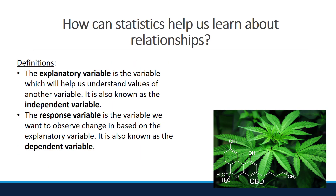The explanatory variable is the variable which helps us understand the value of another variable. It is also known as the independent variable. In the news article, whether a state has marijuana laws would be the explanatory variable, since the researchers are looking to see if marijuana legalization can change opioid prescription patterns.